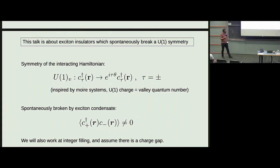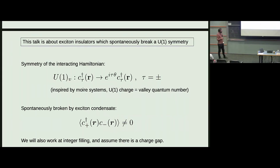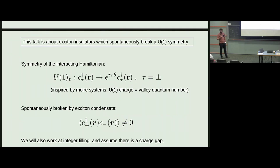This is entirely motivated by Moiré systems, where this additional U(1) charge would be the valley quantum number. I want to consider a situation where this U(1)V symmetry is broken spontaneously by the interactions, because there is an exciton condensate where the condensed excitons carry a non-zero charge under U(1)V—really, in Moiré language, IVC states, intervalley coherent states. To be precise, I will be thinking about systems at integer filling with a charge gap resulting from this symmetry breaking.